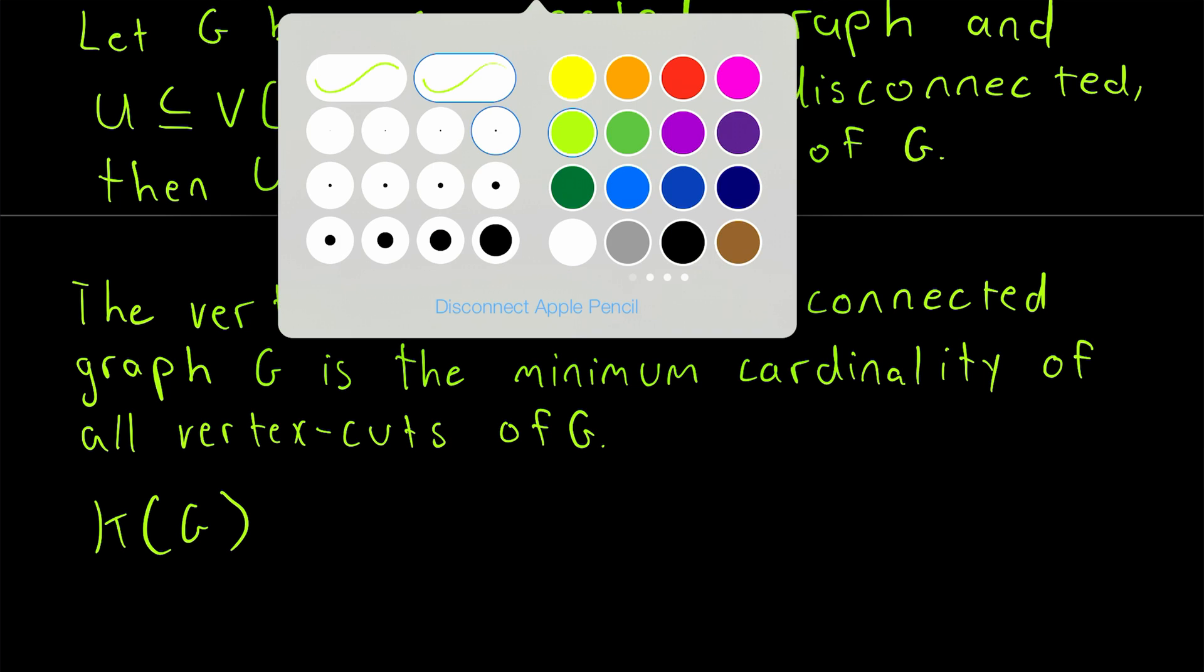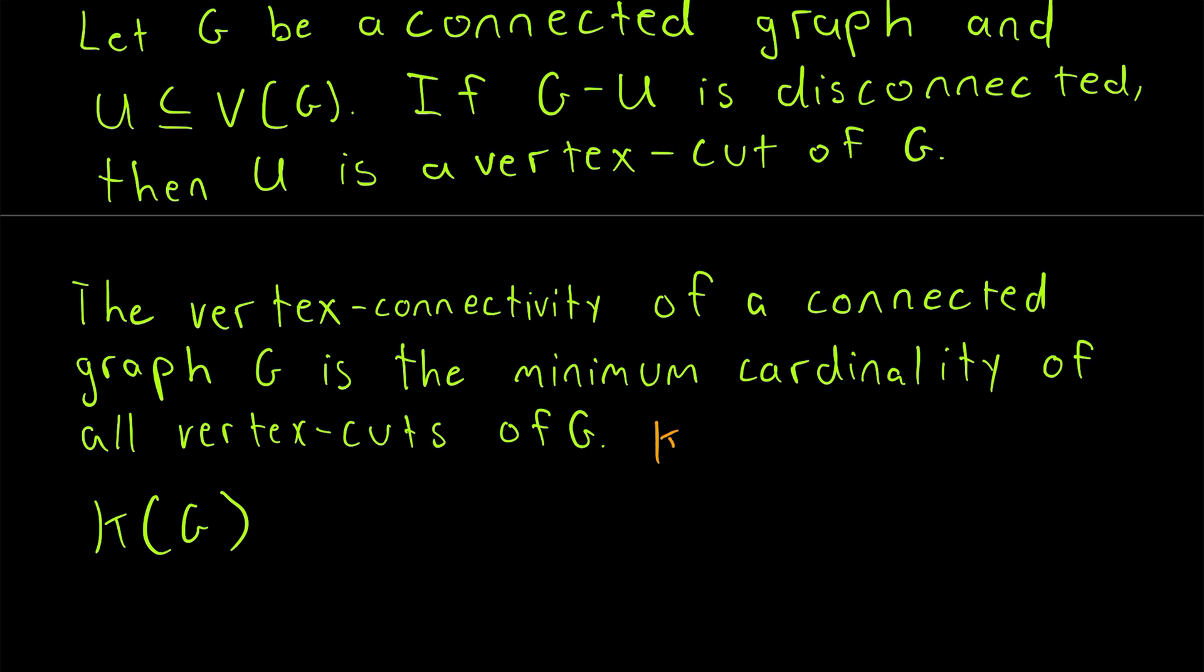However, if a graph is complete, so say we've got a graph KN, which denotes a complete graph on N vertices, this graph doesn't have any vertex cuts, as we saw in our example above. However, we do define its vertex connectivity.